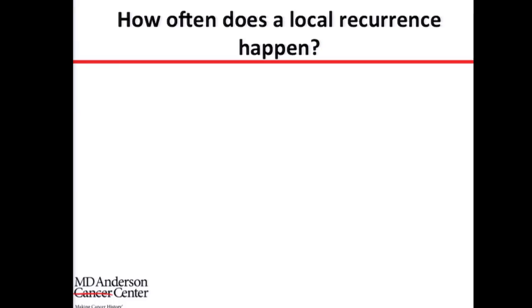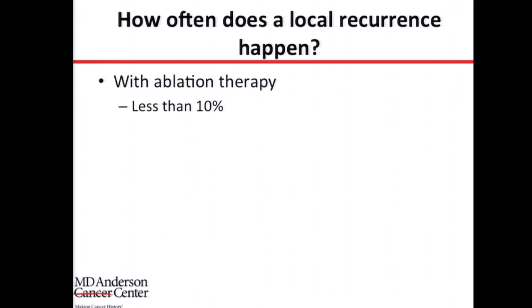How often does a local recurrence happen? It's very variable and depends on how we treated the patient initially. With ablation therapy — cryoablation or radiofrequency ablation — it should happen less than 10% of the time. Some older studies report rates of about 20% to 25%, but that was when ablation therapy was newer and clinicians were less familiar with it and weren't always clear about appropriate indications.